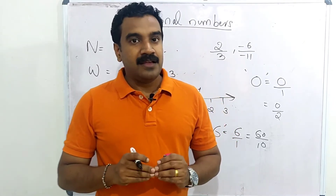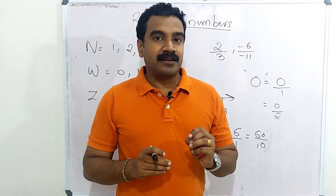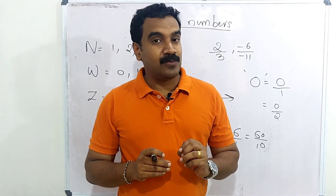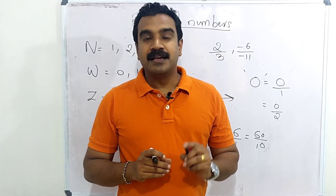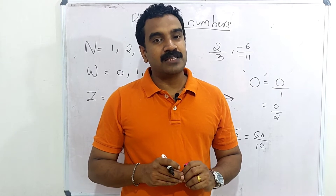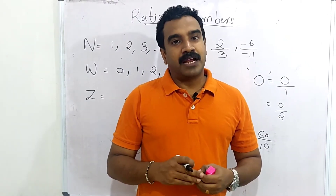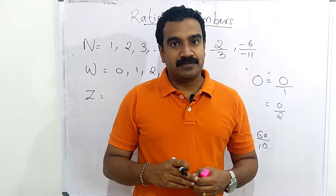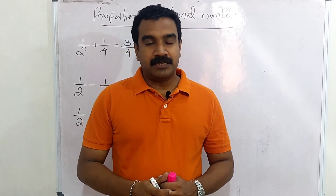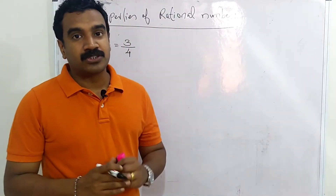Once again: a number which we can write in the form P by Q, where P and Q are integers and Q is not equal to 0, is known as a rational number. Now let's discuss the properties of rational numbers. The first one is the closure property.